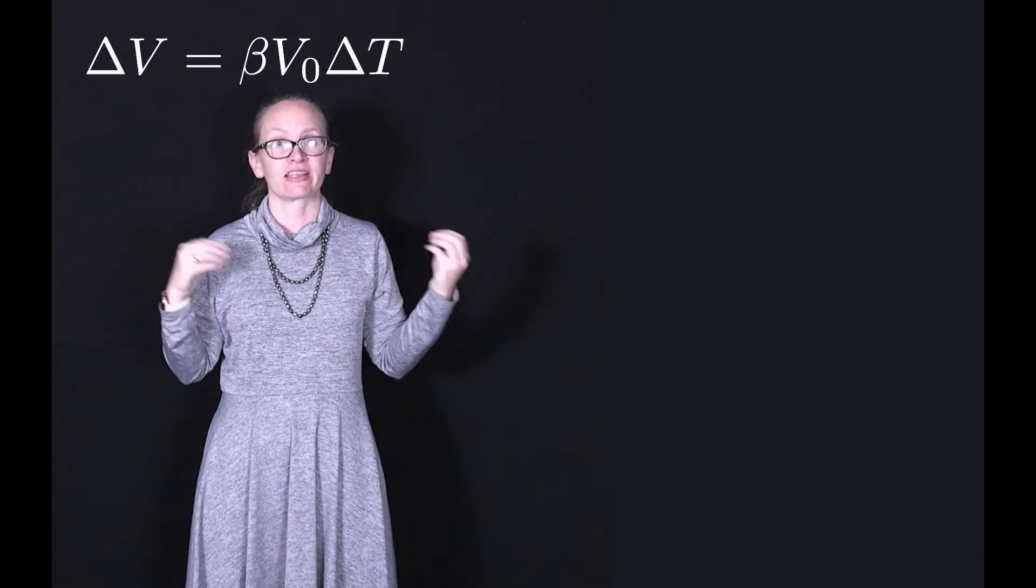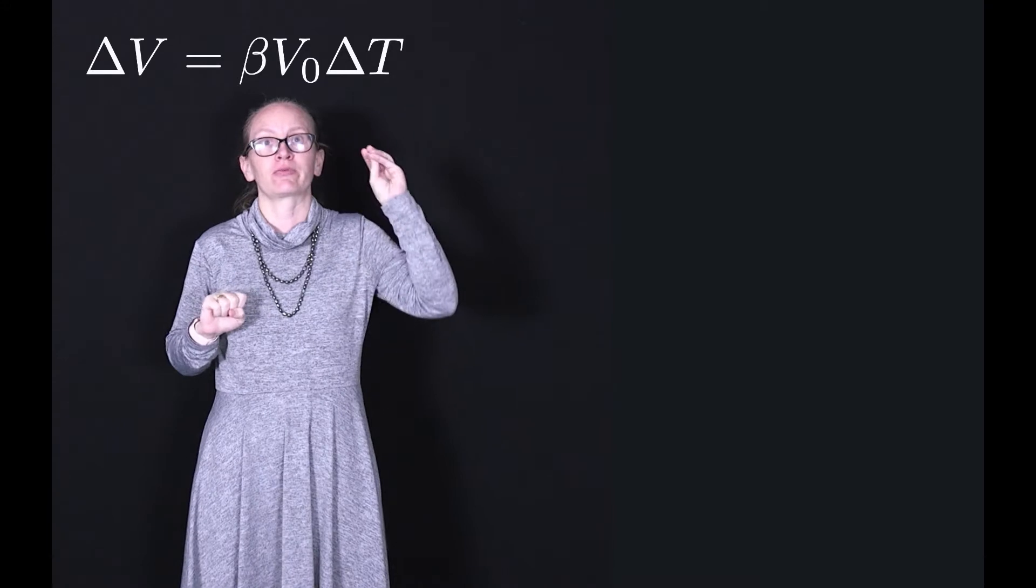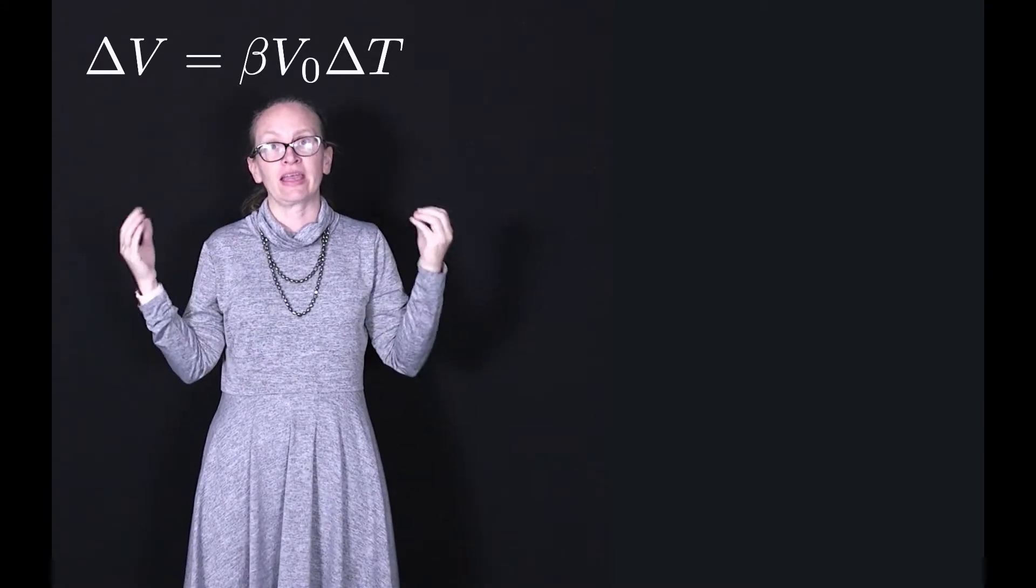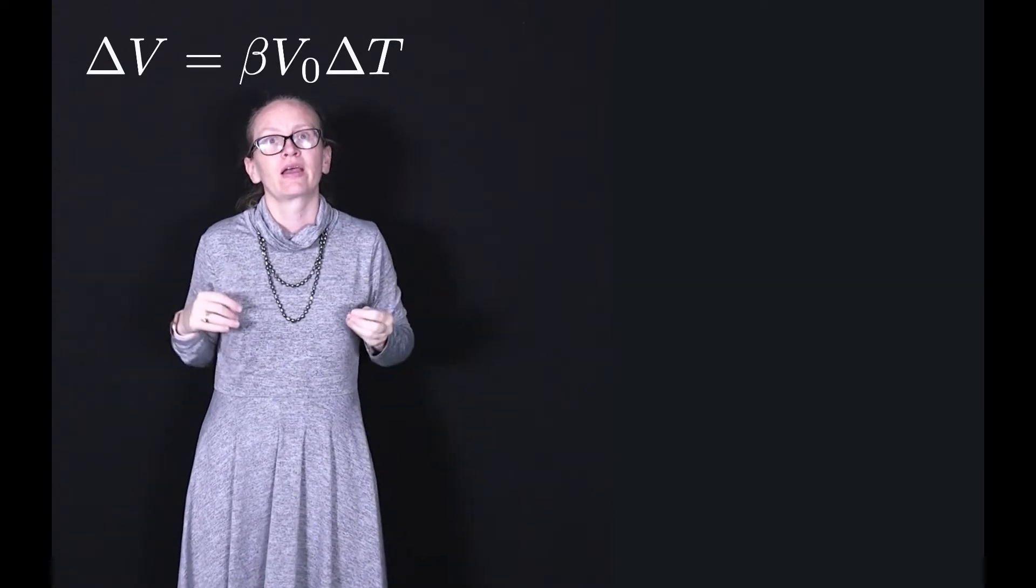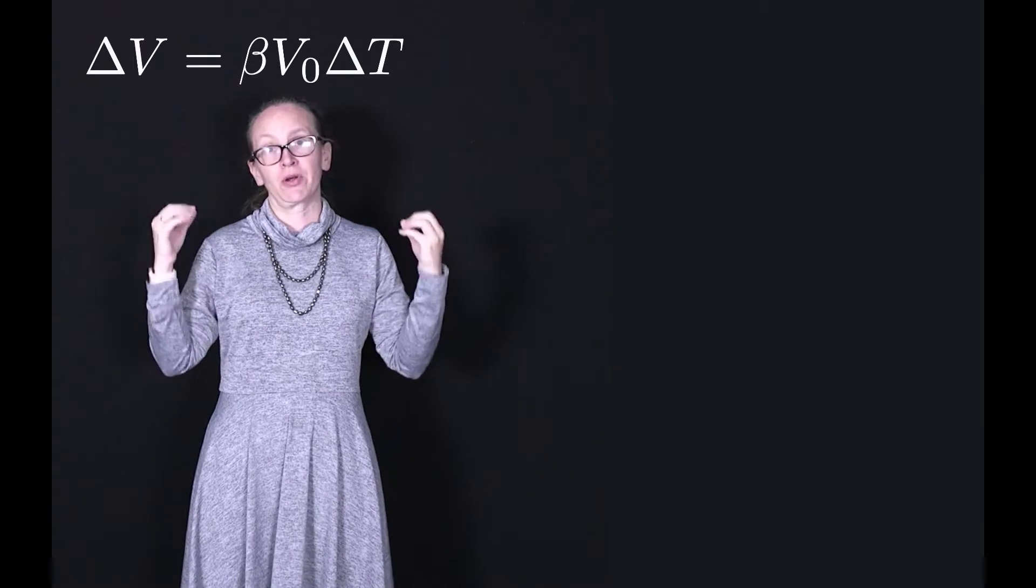Now it turns out that for several reasons water is actually a very special liquid. So we've seen how the volume of a liquid changes as the temperature changes. We can write that the change in volume is equal to beta times V0 times delta T, where V0 is the initial volume. Now this is a relatively good approximation for most liquids.